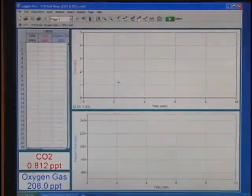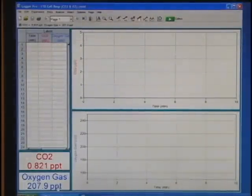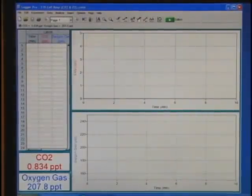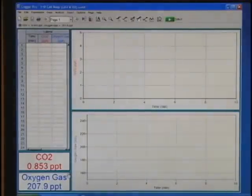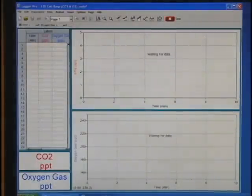Notice that the units have now been reset to parts per thousand for both the CO2 and oxygen gas sensors. The CO2 gas sensor has a 90-second warm-up period, so wait at least 90 seconds to begin data collection. After 90 seconds, watch the CO2 levels to see that they're starting to increase. If they are, start data collection.